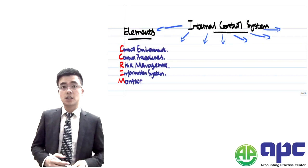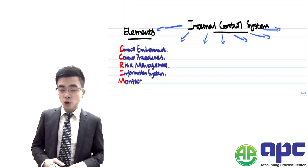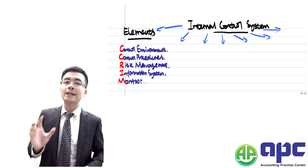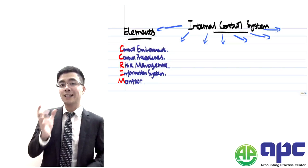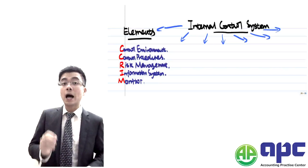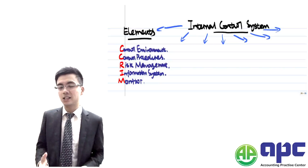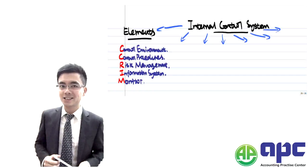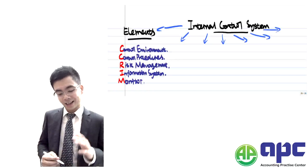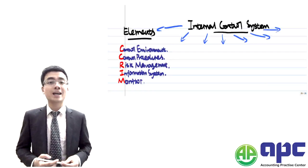In some circumstances, we also set up whistleblowing systems. For example, if anybody is in breach of the internal control system within your organisation, they can report the issue to a particular senior member, maybe within the audit committee. We're going to look at the audit committee's roles shortly.